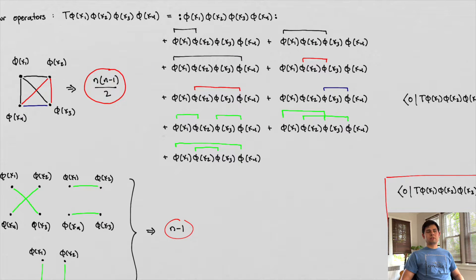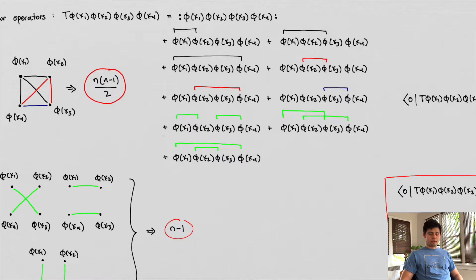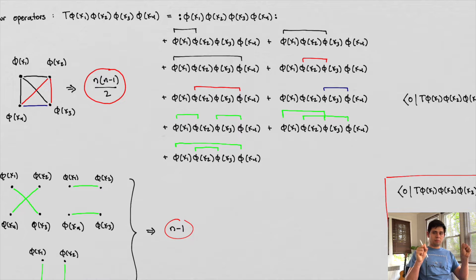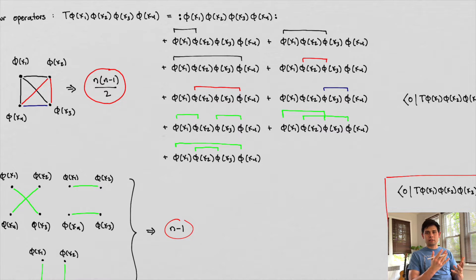So this is Wick's theorem. Wick's theorem essentially states that there's a difference between the time-ordered product and the normal-ordered product of a field at different locations in space and time, and that difference between the two is equal to the contraction of the two. We've mathematically shown that we can take a field and split it up according to its creation and annihilation operators, and when we do that splitting and ordering, we take the difference — that's what's called contracting.